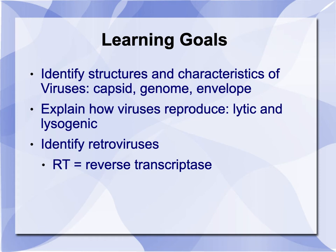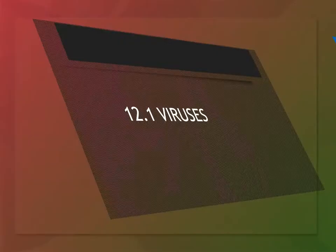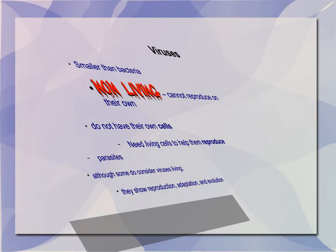Our first unit is going to be about viruses, and we expect you to be able to identify structures and characteristics of viruses, including the capsid, the genome, and an envelope, explain how they reproduce, the differences between lytic and lysogenic cycles, identify what retroviruses are, and the important molecule they contain called RT, which is reverse transcriptase.